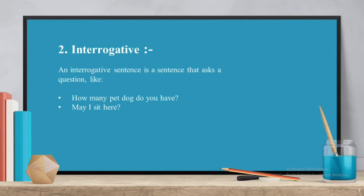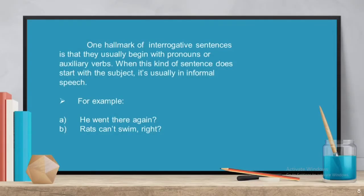Interrogative sentences mean to question someone. One hallmark of interrogative sentences is they usually begin with a pronoun or auxiliary verb. When this kind of sentence does start with the subject, it's usually informal speech. For example: He went there again? Rats can't swim, right?